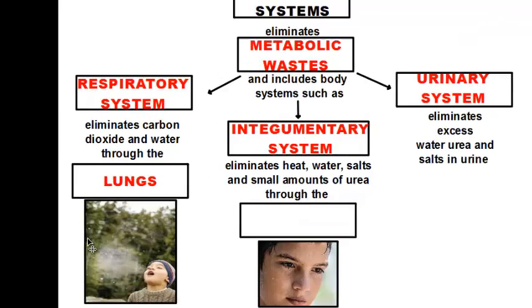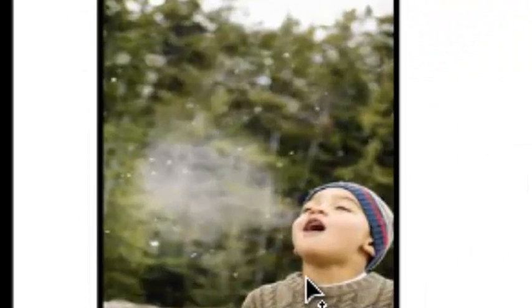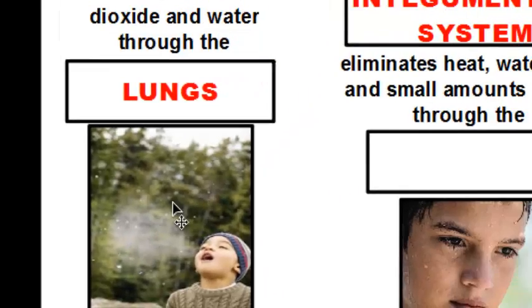Down in the picture here, this young boy is exhaling in cold air. The cold air is making the water vapor produced by cell respiration condense into liquid water droplets — that's why we see fog. And then there's carbon dioxide mixed in as well. That's how the respiratory system gets rid of metabolic wastes.